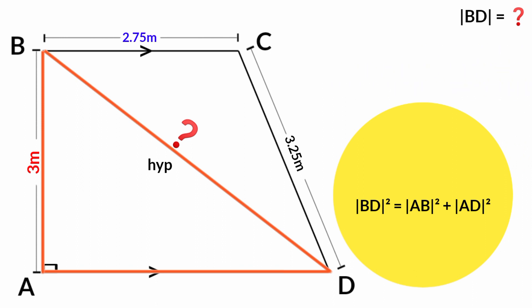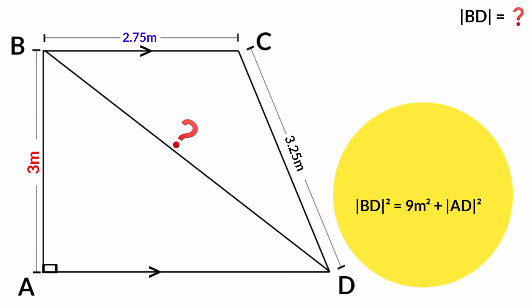Line AB is 3 meters, and 3 meters squared is 9 meters squared. So line BD squared equals 9 square meters plus line AD squared. Now, what is the length of line AD? We don't know yet.